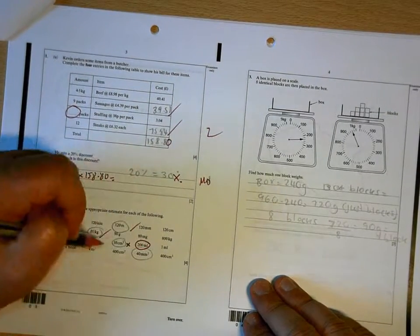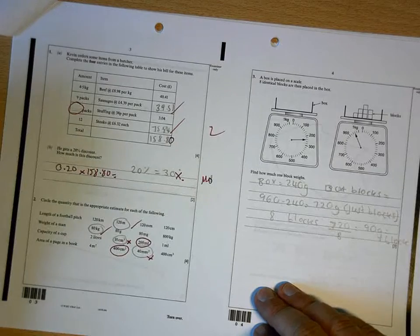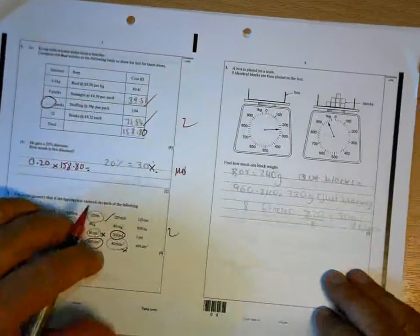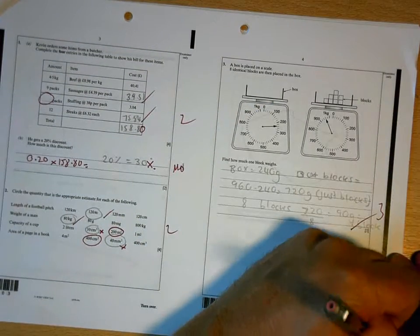Capacity of a cup is milliliters, and that one is 400 centimeters squared. So 2 out of 4 for that. 90 grams is correct, well done. 7 for the page.